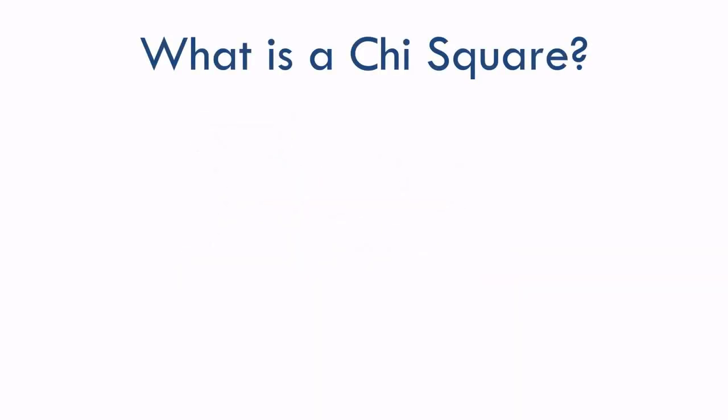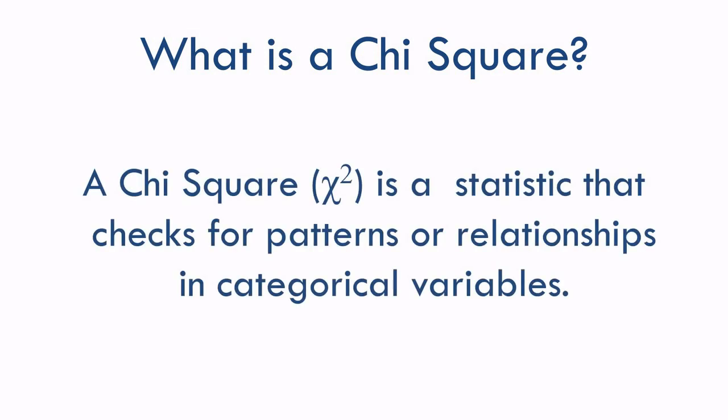So what is a chi-square? It's got kind of a funny name, a lot of folks find it a little confusing, but fortunately it's actually really straightforward. A chi-square checks for patterns or relationships in categorical variables. That's all it does.